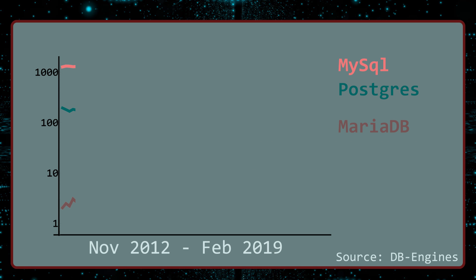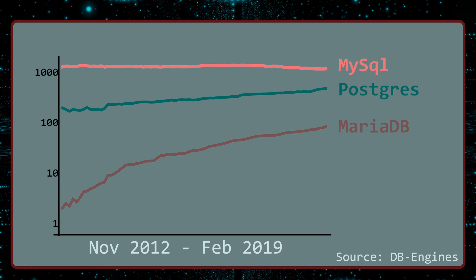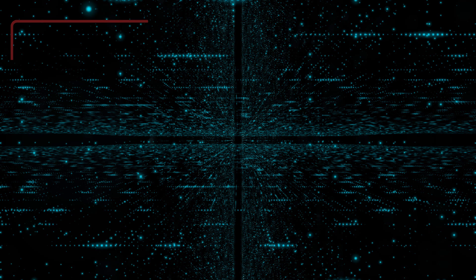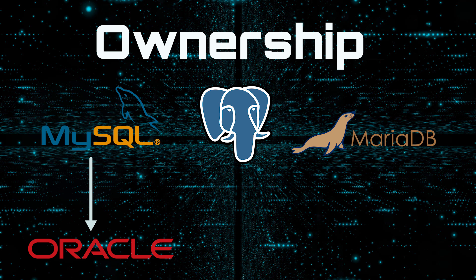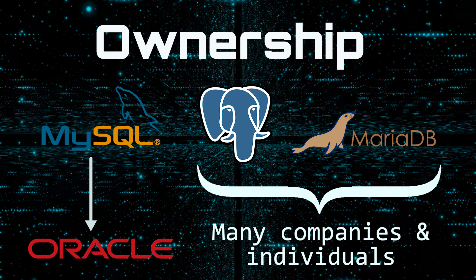In recent years, MySQL has stopped growing in popularity and has seen a mild decline in market share as the competition has grown. Meanwhile, Postgres and MariaDB continue to grow in popularity, with Postgres leading the way. While MySQL is owned by Oracle, neither Postgres nor MariaDB are owned by a single company. Their continued development is supported by a large and enthusiastic group of engineers scattered around the world.